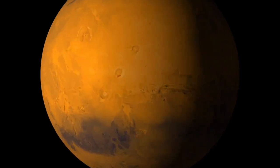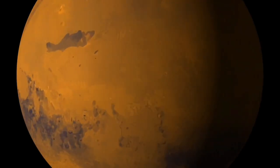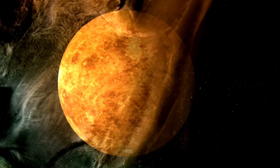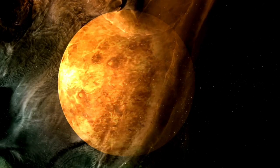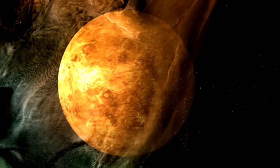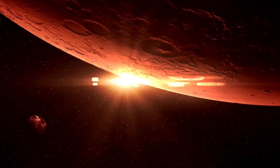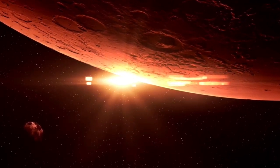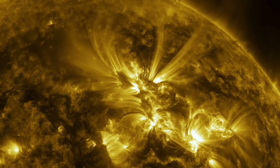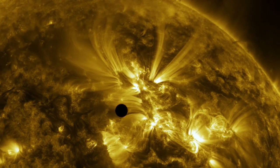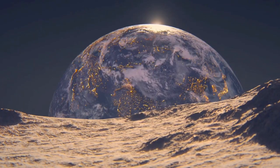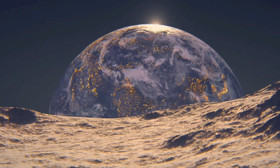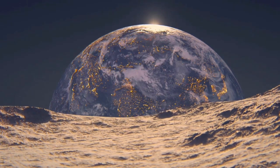Red dwarfs like Proxima Centauri are smaller, cooler, and have much longer lifespans than stars like our sun. Their low brightness makes them challenging to observe, but it also means their habitable zones are much closer to the star. For Proxima Centauri, this translates to an orbital distance of just 0.05 astronomical units, a mere fraction of the distance between Earth and the sun.